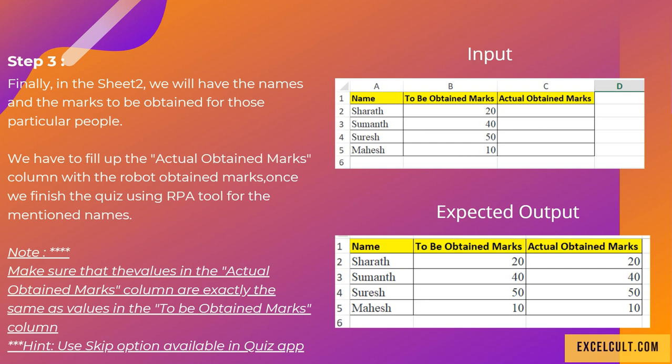The only thing that you have to remember is to make sure that the values you obtain in the actual obtained marks column should always match with the to be obtained marks column. That is how we can confirm that you were successfully able to automate this process. You can just use the skip option available.